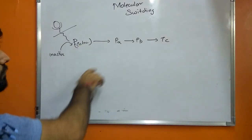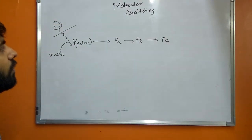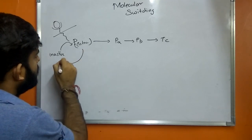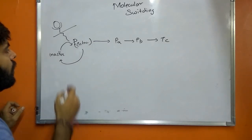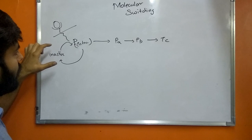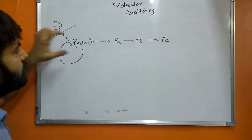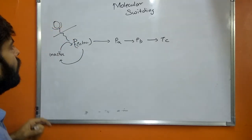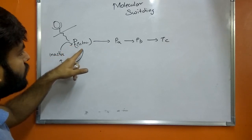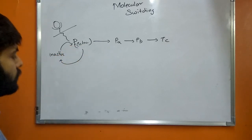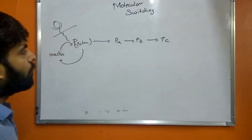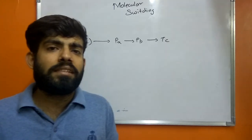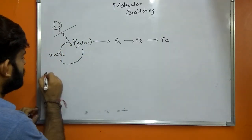Suppose the cell wants to carry out the same signaling pathway in future — the protein is needed again, so it has to be converted back into its original inactive form. The conversion of a protein from its inactive form to active form is known as switching on, and the conversion from its active form to inactive form is known as switching off. This switching on and off is carried out by a set of proteins known as protein kinases.